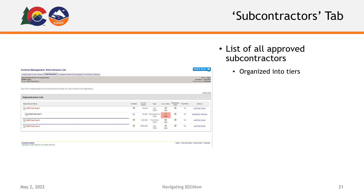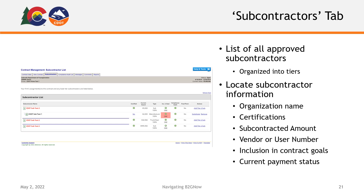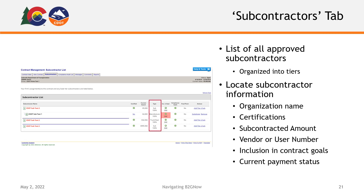The Subcontractor tab is where you will find all of the information about the subcontractors for the project. Here you will find a comprehensive list of all approved subcontractors on a given project. The subcontractor list is organized into tiers indicating under which organization each subcontractor was hired. Subcontractors with a one beside their name are first-tier contractors hired directly by the prime. Entries with a two beside them are second-tier subcontractors hired by any first-tier subcontractors, and so forth. Using this list, you can locate each subcontractor's information including their organization name, any certifications, the amount which they are subcontracted for, their vendor or user number, whether they are included in the project's DBE goal, and whether they have received final payment.